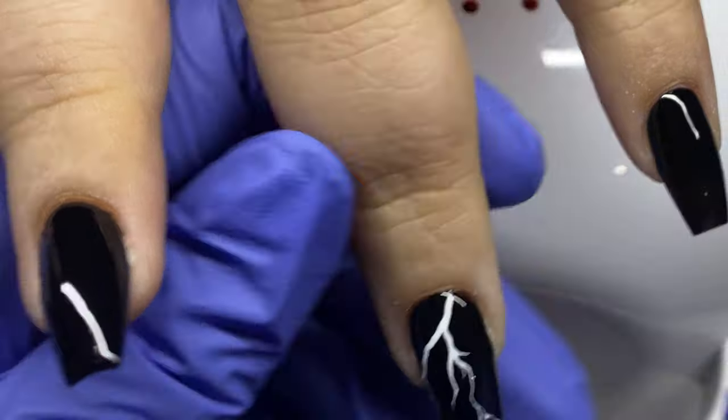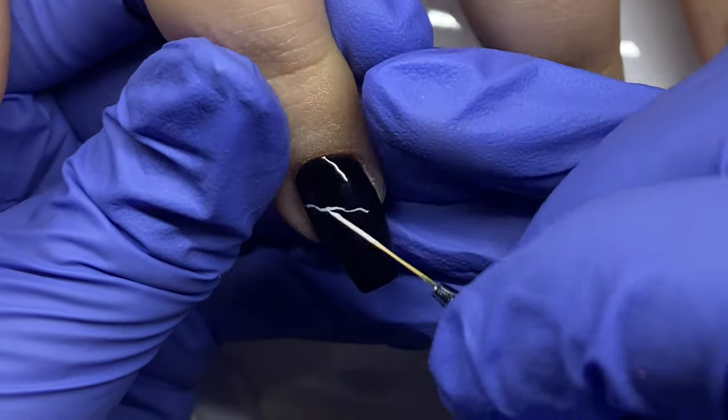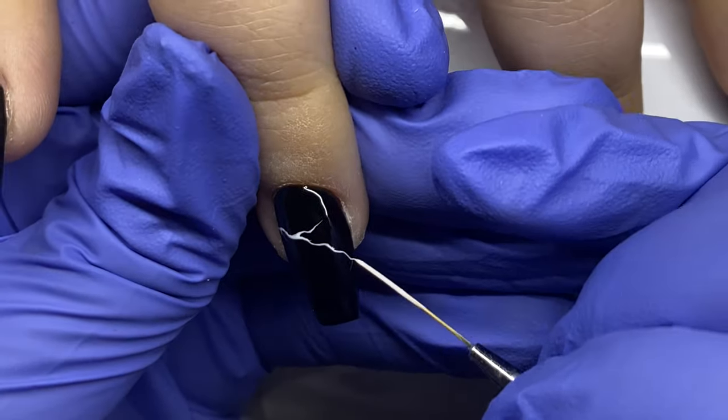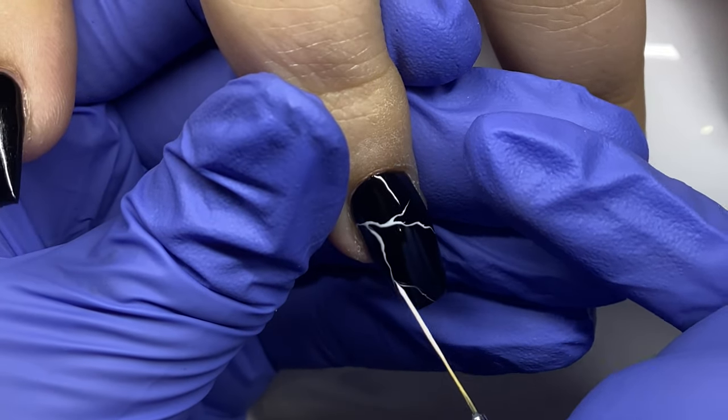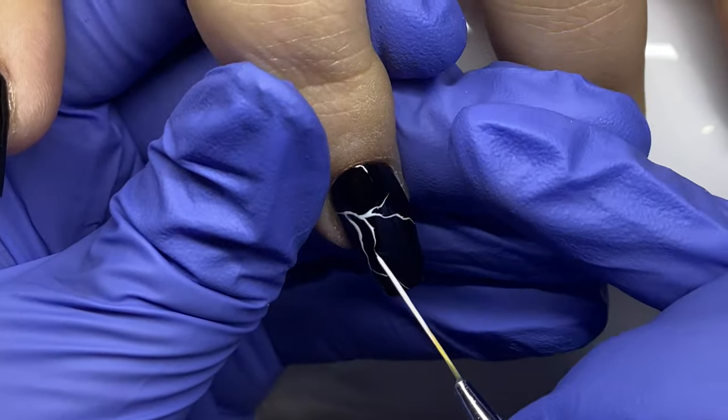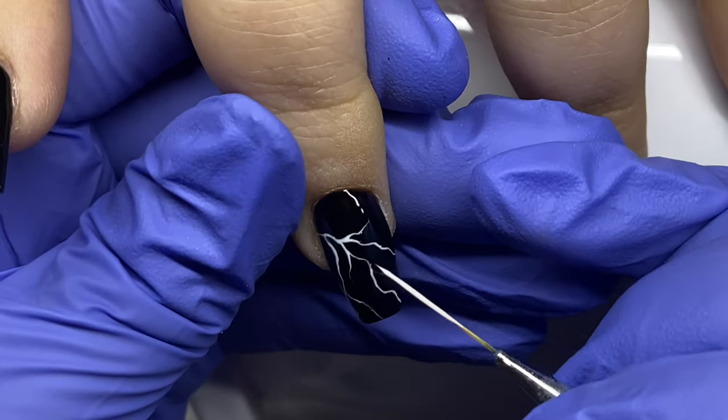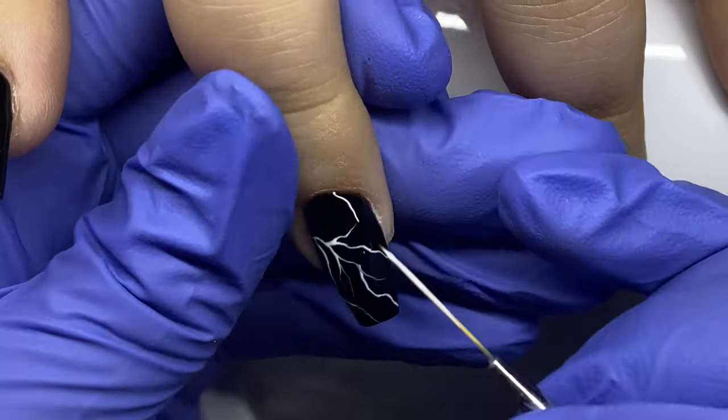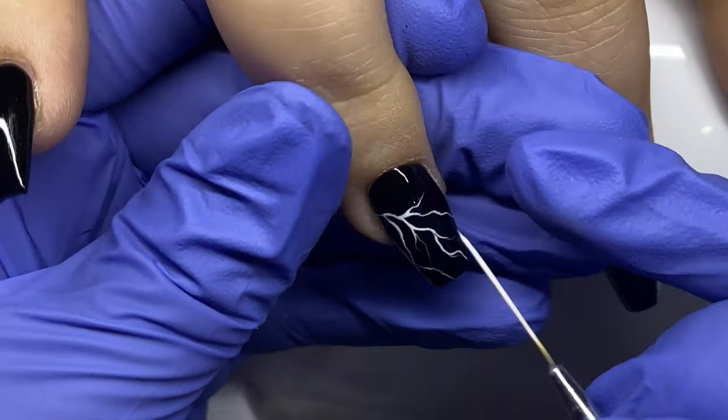We're starting off with a bright white base. Use your best gel polish or gel liner that you want to use. I'm using a striper brush, a long striper brush, and I'm drawing these lines. So I recommend that you look up—I literally did.